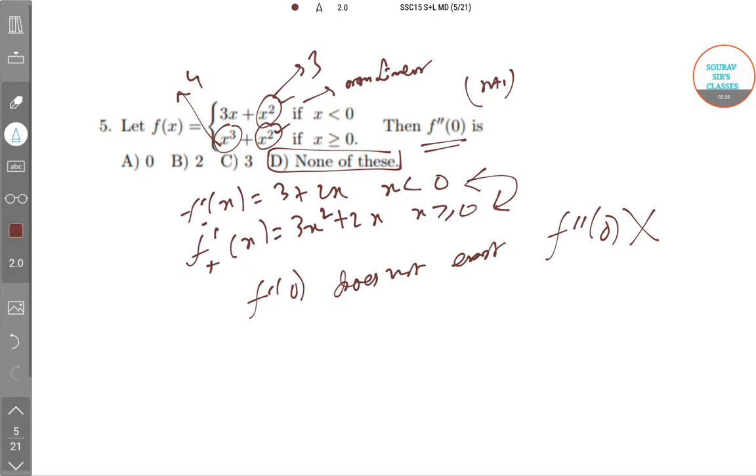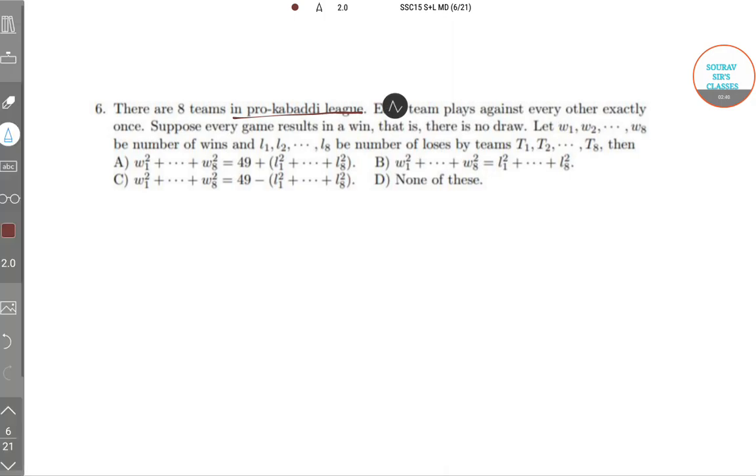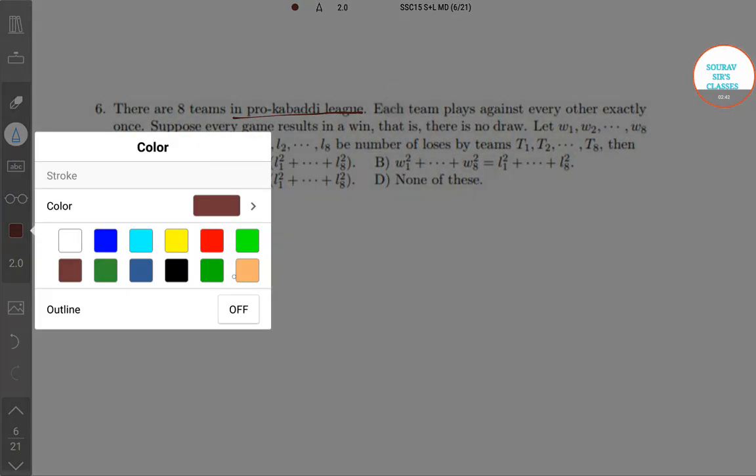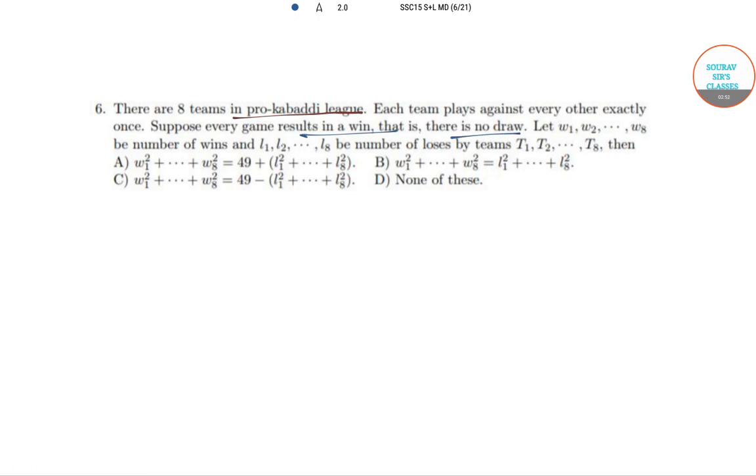Now next question. There are 8 teams in pro-kabaddi league. This one is a little bit new question. Each team plays against every other exactly once. Suppose every game results in a win, that is there is no draw, and w1, w2 to w8 is the number of wins, and l1 to l8 is the number of losses by teams t1, t2 to t8. Then which of these values will be correct?